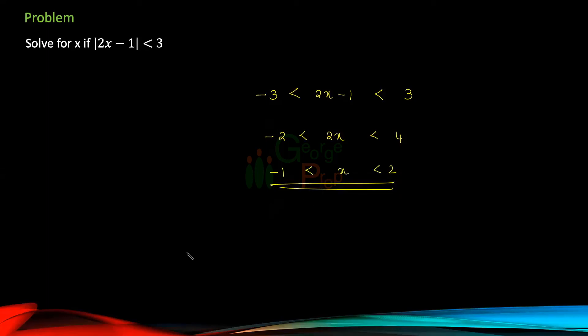This gives us the range. It can also be represented as minus 1 comma 2 with brackets on both sides, which mean I'm neither including minus 1 nor including 2, but everything between minus 1 and 2.